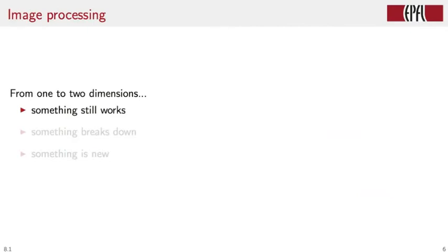So in image processing, we're moving from one to two dimensions. And we know quite a bit about one-dimensional signal processing already. When we move to two dimensions, something still works, something unfortunately breaks down, and new things appear. So let's look in turn at these three scenarios.